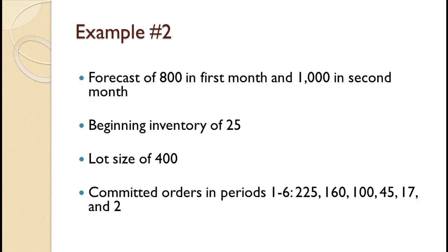In this example for you to try, a firm has a forecast of 800 in the first month and 1000 in the second month. They have beginning inventory of 25 and a lot size of 400. They have committed orders of 225 in period 1, 160 in period 2, 100 in period 3, 45 in period 4, 17 in period 5, and 2 in period 6. Compute the master production schedule. Since you have seen an example already, pause the video and try to work this problem on your own. Once you are done, you can use the video to check your work and spot any mistakes you might have made.